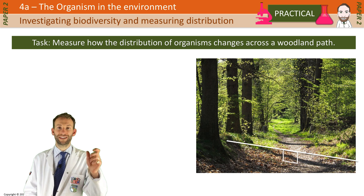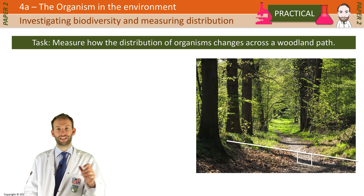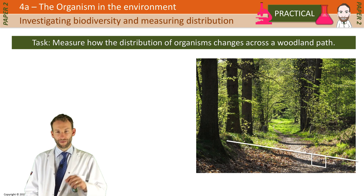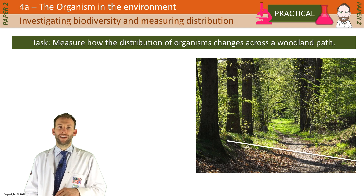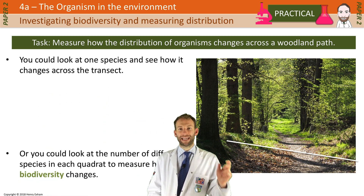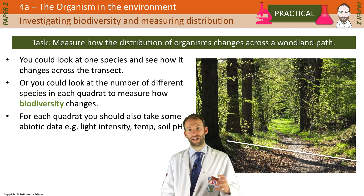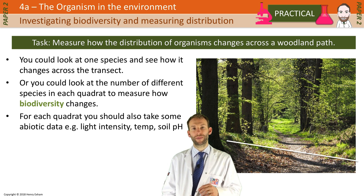You're going to record what stage it is on the transect — metre number one, metre number two, etc. — and record what you find in each of the quadrats. You're also going to take some abiotic data in each quadrat as well, such as the light intensity and the temperature.